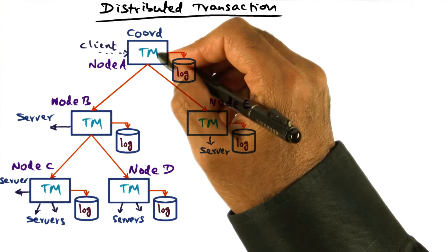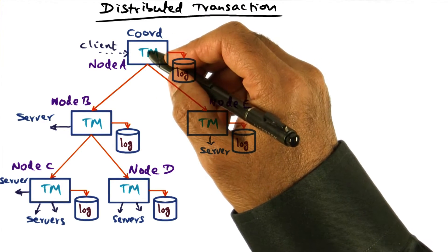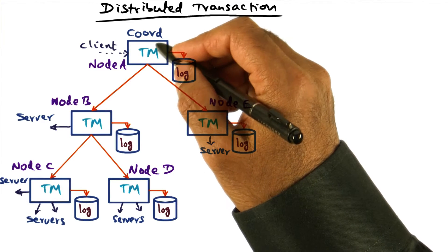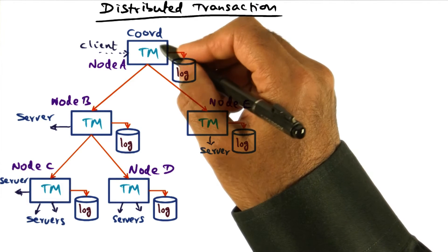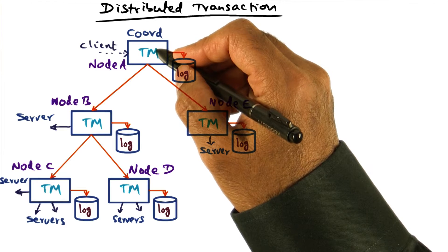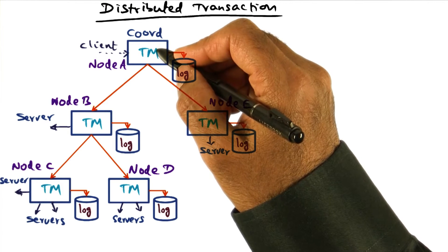And the transaction manager where the client server interaction originates is the owner as well as the coordinator. But it is designatable to some other node as I mentioned already.